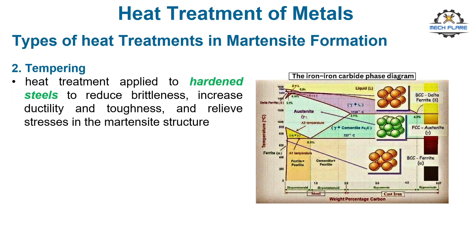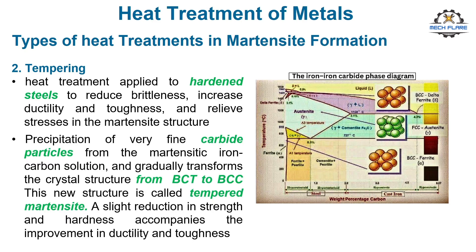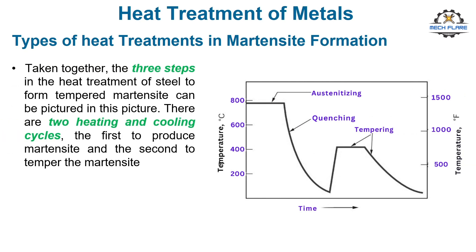Tempering is a heat treatment applied to hardened steels to reduce brittleness, increase ductility and toughness, and relieve stresses in the martensite structure. Martensite is hard and brittle. Tempering involves heating and soaking at a temperature below the austenitizing level for about one hour, followed by slow cooling. This results in the precipitation of very fine carbide particles from the martensitic iron-carbon solution, and gradually transforms the crystal structure from body-centered tetragonal (BCT) to body-centered cubic (BCC). This new structure is called tempered martensite. A slight reduction in strength and hardness accompanies the improvement in ductility and toughness. The three steps to form tempered martensite involve two heating and cooling cycles: the first to produce martensite and the second to temper the martensite.